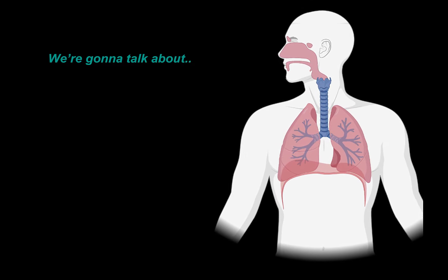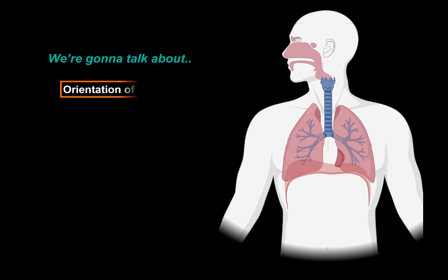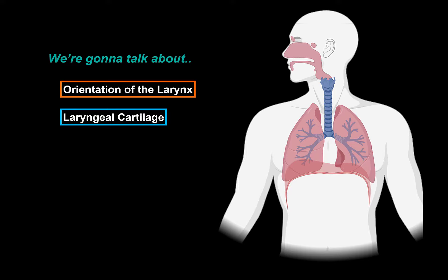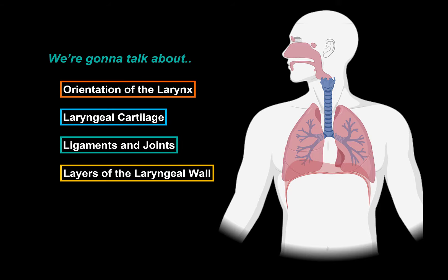In this video, we will start with orientation by looking at the anterior and the posterior view of the larynx. Then we will talk briefly about the cartilages that make up the larynx, as well as the ligaments and joints that hold the whole thing together. Then we will do the walls of the larynx,